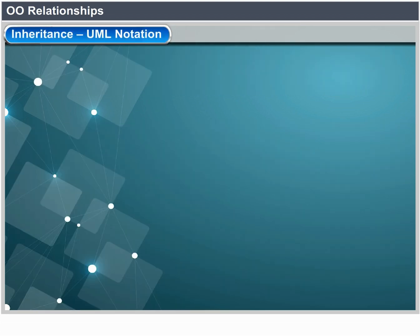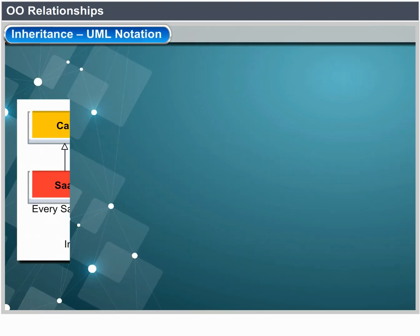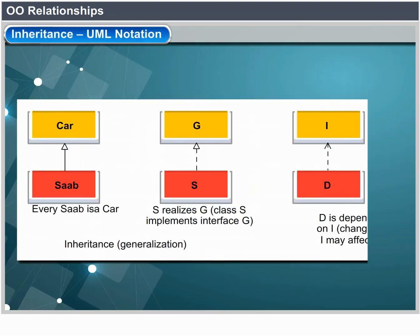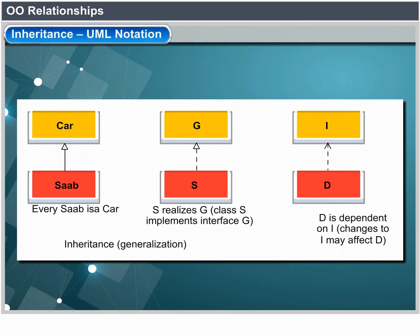Inheritance UML notation: every subclass is a car; S realizes G means class S implements interface G; D is dependent on I means changes to I may affect D. This illustrates inheritance generalization notation.